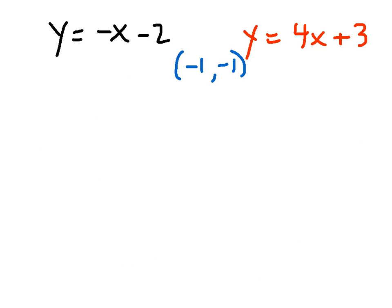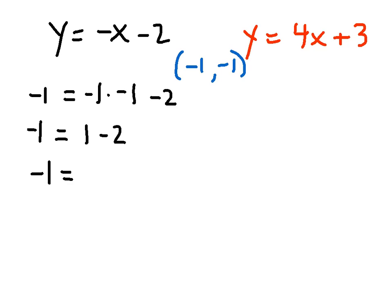Remember, the solution to a system of equations is a set of values that satisfies both equations. So I can check that the ordered pair negative 1, negative 1 works in both equations. Since both my x and y values are negative 1, I'll put negative 1 in for both. Checking the first equation: negative 1 equals negative 1 times negative 1, minus 2. That gives me 1 minus 2, which is negative 1. Since negative 1 equals negative 1, it checks out in the first equation.